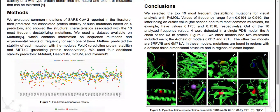Data was available on ModeFunk, which contains information on mutations and experimental results of frequency for each mutation. These mutations are predicted with the modules FoldX and SIFT4G. Using this data, we predicted the stability of these mutations using iMUTANT, DIPDDG, MCSM, and DATAMUT2.